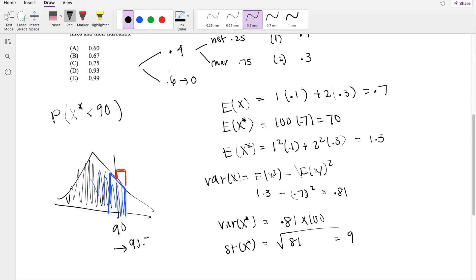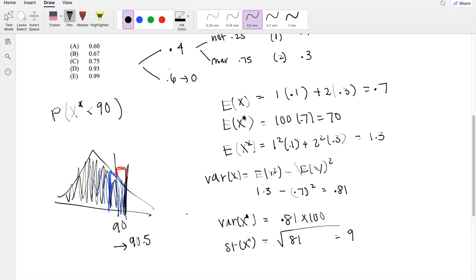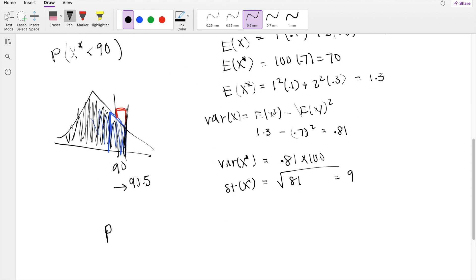Might as well shift the 90 this way over and add 0.5, so start this thing at 90.5. Then it will better approximate this value. Using that continuity correction, this becomes X is less than 90.5.